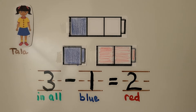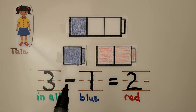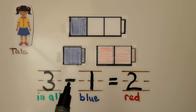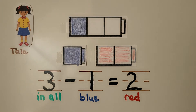Three cubes in all minus the one blue cube equals two red cubes. Three minus one is equal to two. Remember, subtraction uses the minus sign. This minus symbol means we're taking away — taking away some from the number in all.